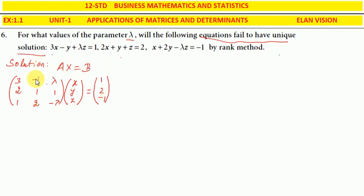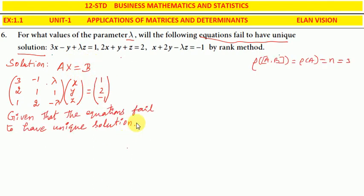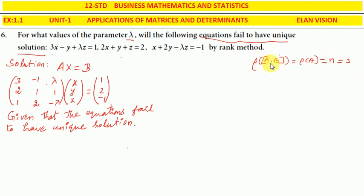So the A matrix, X matrix, and B matrix are identified. This equation is given that it fails to have a unique solution. Unique solution requires rank of A equal to rank of augmented matrix equal to n, where n is the number of variables — x, y, z — that is 3.